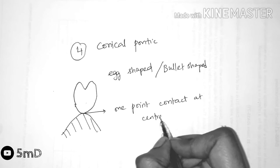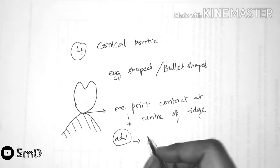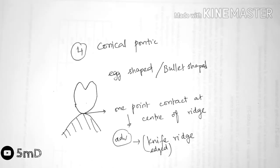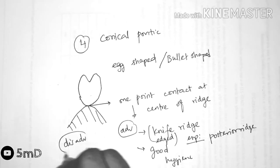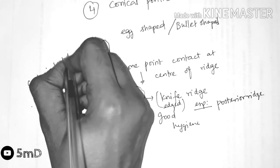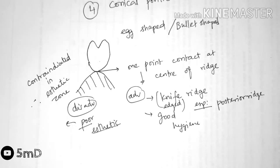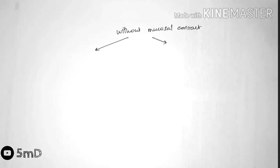Therefore it is indicated in the knife-edged posterior ridges. But it has a major aesthetic concern and does not imitate the emergence profile of natural teeth, therefore not indicated in the aesthetic zones or anterior zone. Now let us see about the final two types of pontic without mucosal contact: the sanitary or hygienic pontic and the modified sanitary pontic.